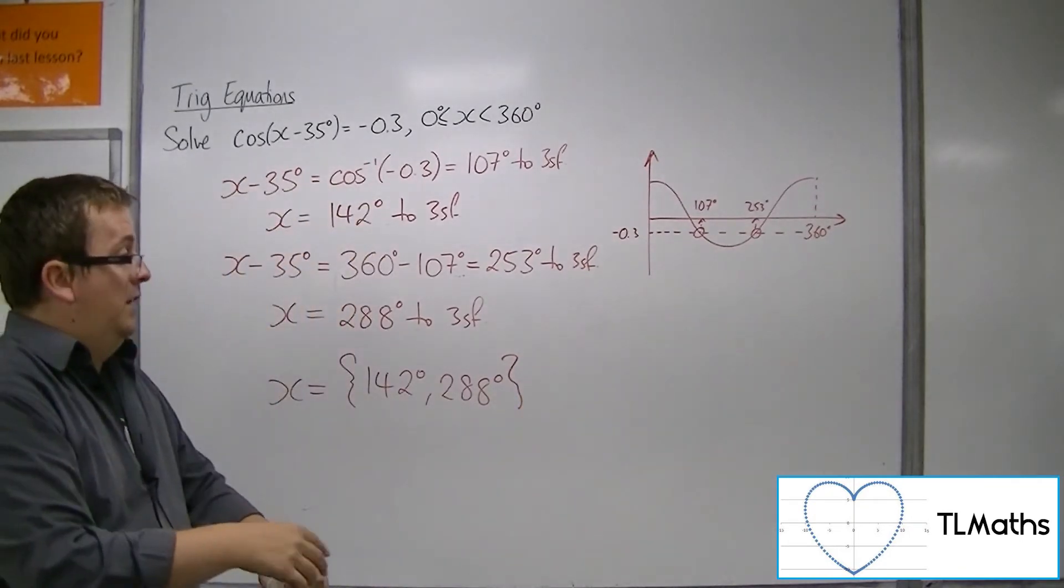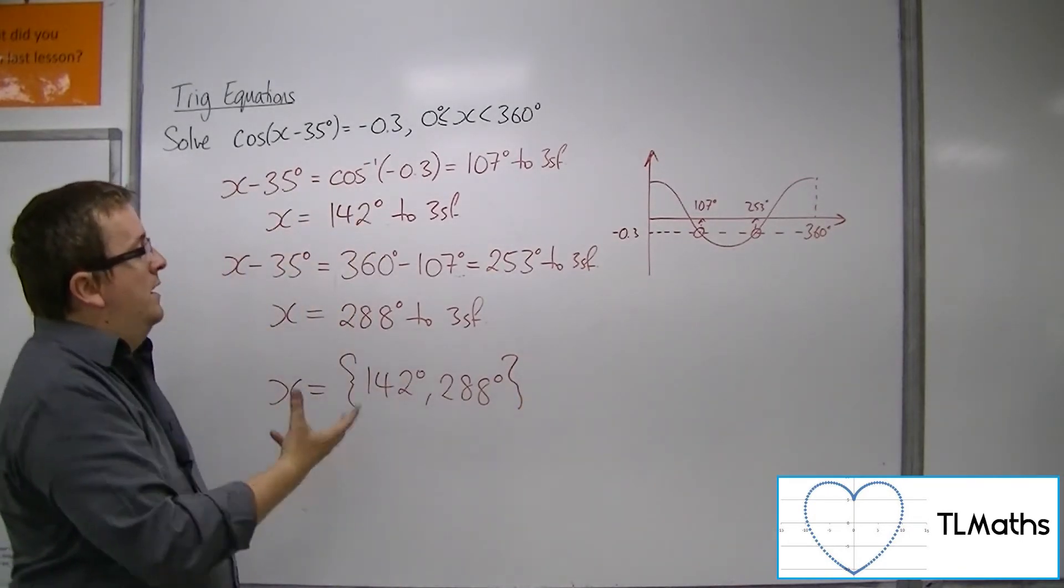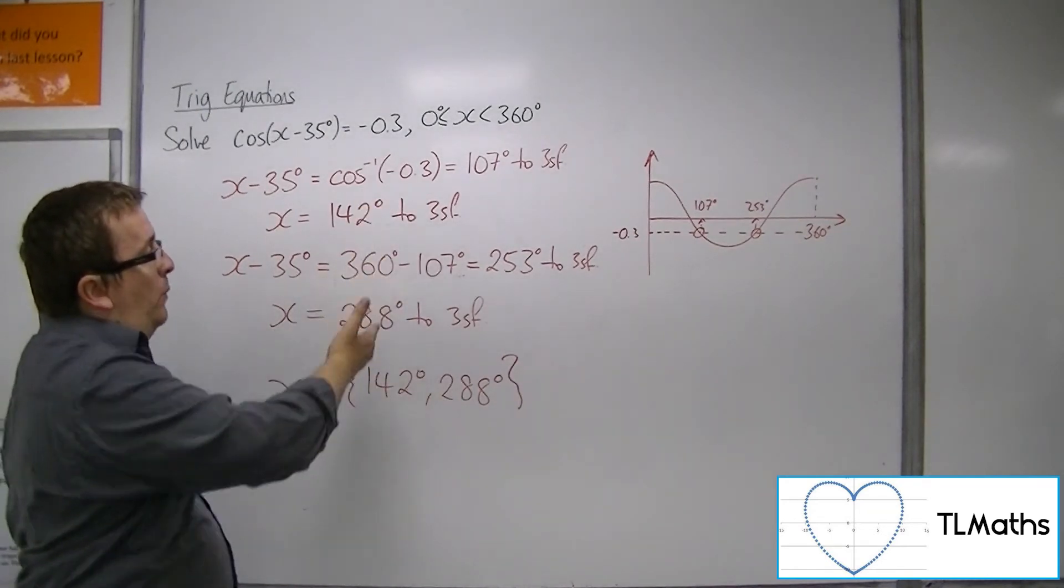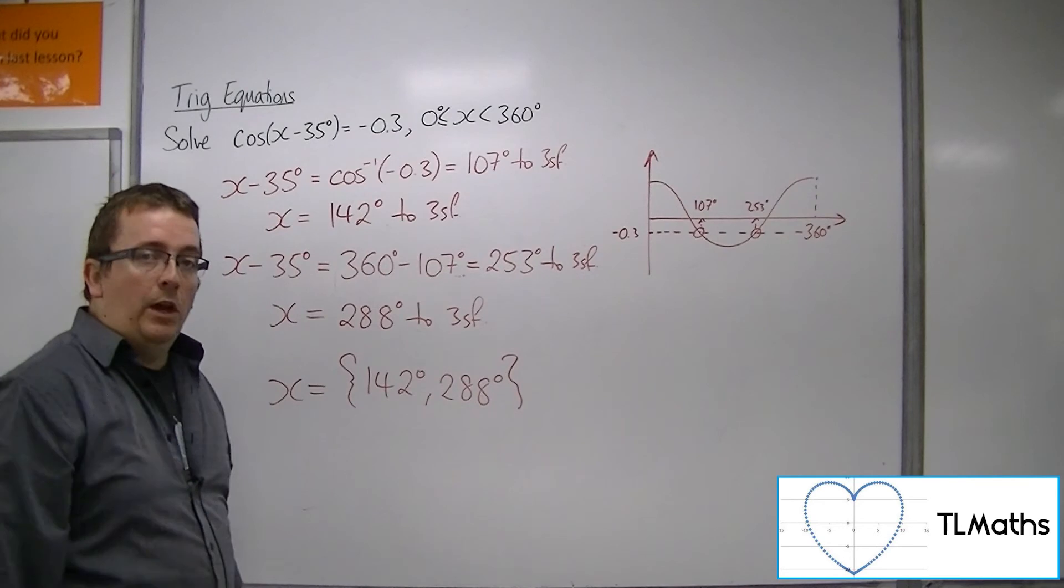We don't need to do anything else to them, unlike the previous example with sine, where we had to add on 360. Neither of these went outside the range, so we don't need to do that.